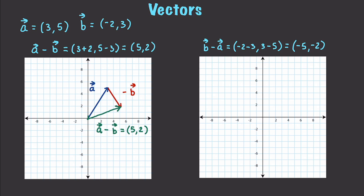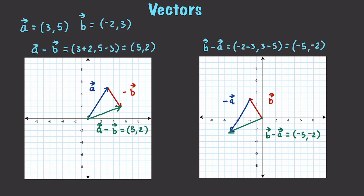For b minus a: vector b is [-2, 3], and then I draw negative a, which is negative three across and down five. So b minus a goes from the tail of b to the terminal point of negative a, equal to [-5, -2]. That gives different results depending on the order of subtraction. More on vectors in the next video. Please leave your questions and comments below — till next time, bye-bye.